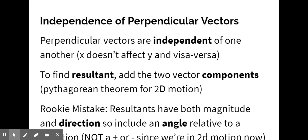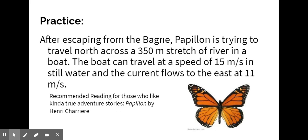So to find a resultant, just a review, to find your resultant, you need to add your two vector components, your x and your y. And in 2d motion, we're going to use our Pythagorean theorem for that. Rookie mistake, just a reminder, resultants have both magnitude and direction. So make sure you include an angle relative to some direction or position. Not just a plus or a minus, because we're in two dimensions now.